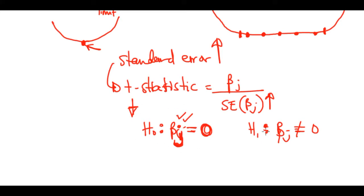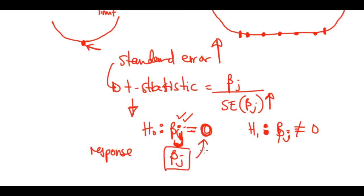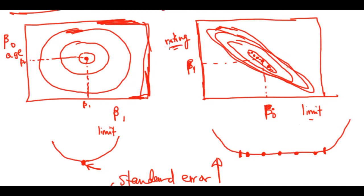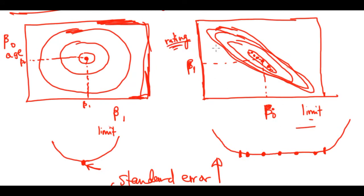When we accept H-naught, we are claiming that beta-j is equal to zero, which hides the relationship between the response and that predictor. For example, if beta-j corresponded to age, we would incorrectly conclude that age doesn't matter in predicting balance — but it could matter. We simply made an error by including collinear predictors like rating and limit.